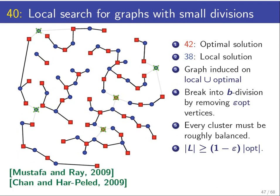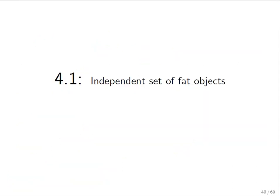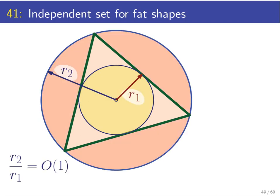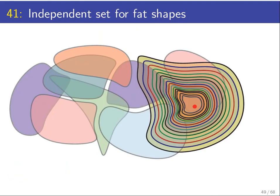The nice thing about this algorithm is it also works for other settings. For example, you can use it to compute independent sets of fat objects. In geometric settings, an object is fat—usually we speak about fat objects in low dimensions—if you look at the largest ball enclosed inside it and the smallest ball enclosing it, and the ratio between the two radii is a constant. Now you give me a set of fat objects.